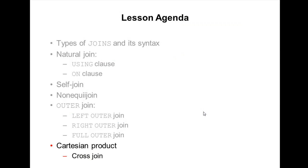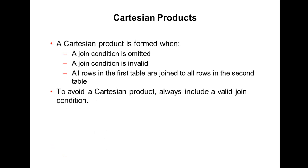Now I'm going to explain Cartesian product. A Cartesian product is formed when a join condition is not given or a join condition is invalid — all rows in the first table join to all rows in the second table. To avoid a Cartesian product, always give a valid join condition.